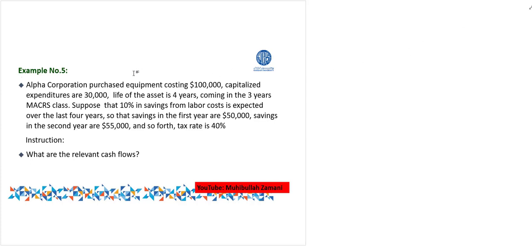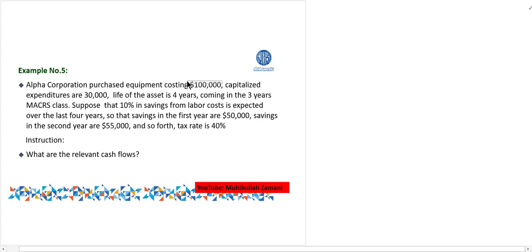Bismillahirrahmanirrahim. Hello, my dear friends. This is example number three for me — example number five according to your slide. I left examples three and four because they were similar to examples one and two. Let me read the question. Alpha Corporation purchased equipment: cost of the asset is equal to one lakh. Capitalized expenditures are equal to 30,000.